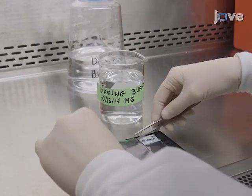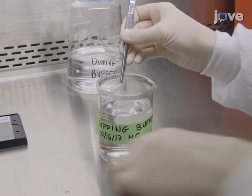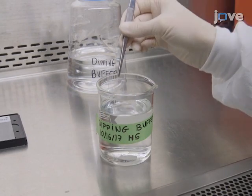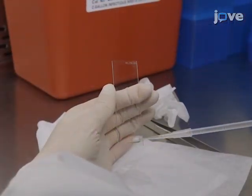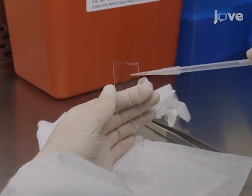To perform microarray scanning, immerse the slide twice into 200 milliliters of freshly prepared dipping buffer. Dry the microarray for around 1 minute by very carefully aspirating from the top to the bottom of the slide without touching the slide surface.